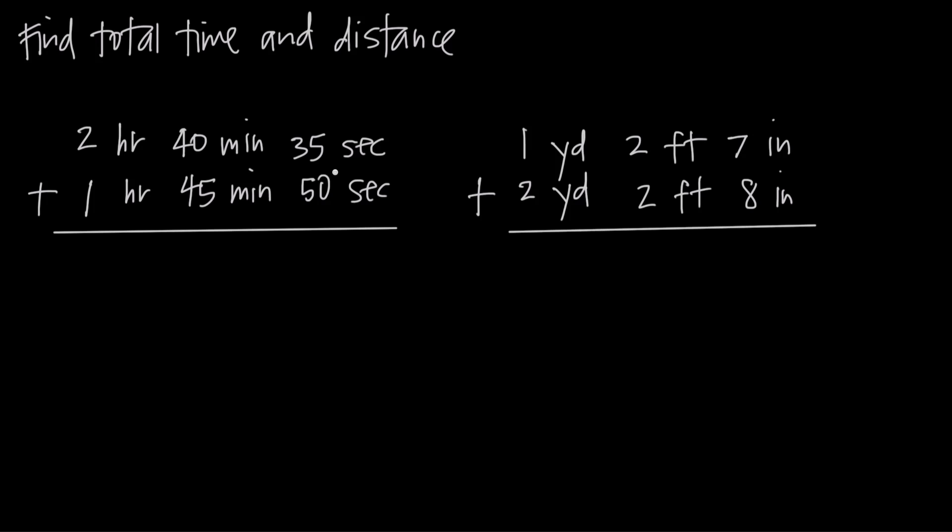It's similar to regular addition. We start on the right-hand side, adding seconds first, then carrying over to minutes if needed, then carrying over to hours to get our final time. So 2 hours 40 minutes 35 seconds plus 1 hour 45 minutes 50 seconds - what's the total time?